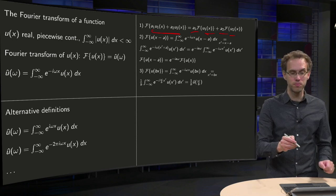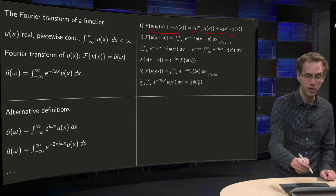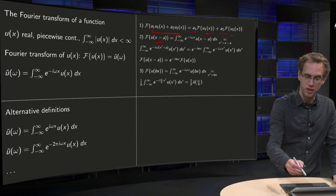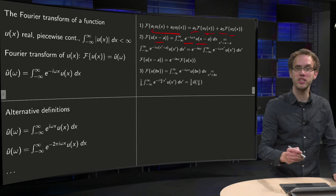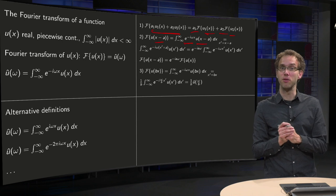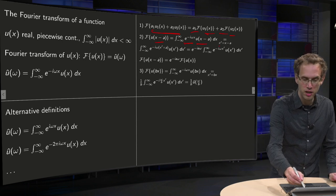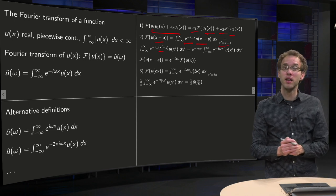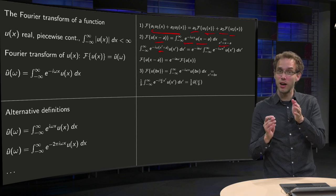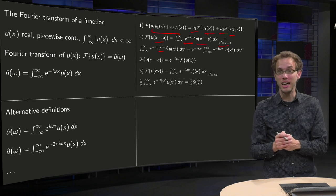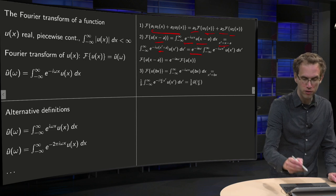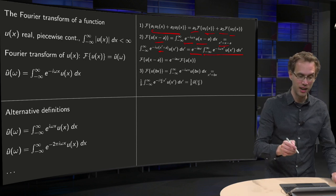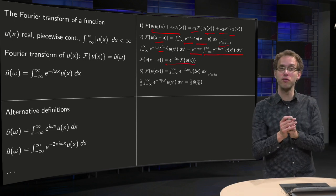Suppose you have the Fourier transform of u of x — what happens if you try to compute the Fourier transform of u of x minus a? Let's use the definition to see what happens. Here is the definition: e to the power of minus i omega x times u of x minus a. We want u of x there, because we know something about the Fourier transform of u, so we substitute x-prime equals x minus a, so dx-prime equals dx, and the boundaries remain from minus infinity to infinity. But then we get x-prime plus a in the exponent, giving an additional factor e to the power of minus i a omega, which does not depend on x. So it is a constant with respect to the integration and can be taken in front of the integral. What we have left is the Fourier transform of u, with an additional factor e to the power of minus i a omega.